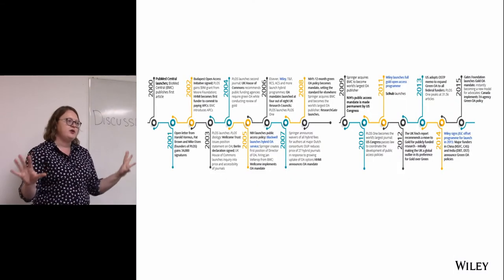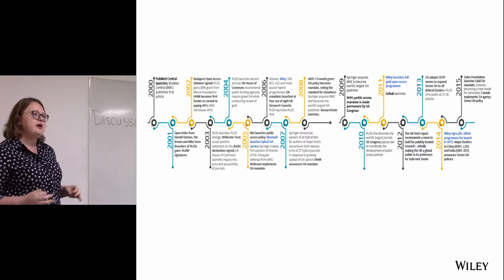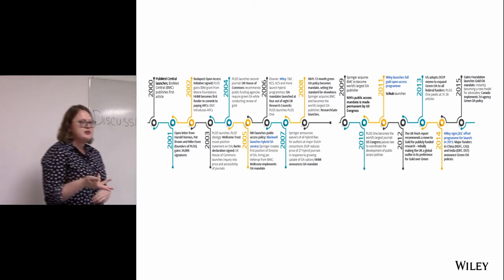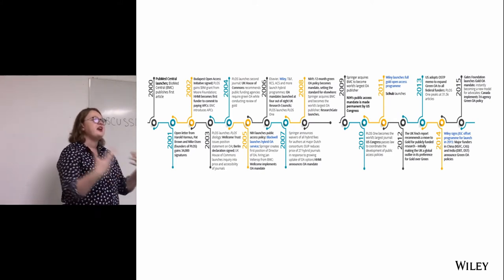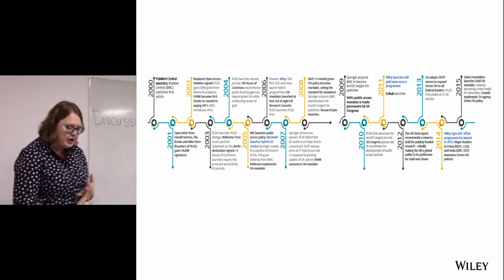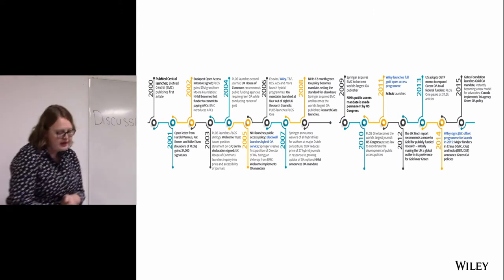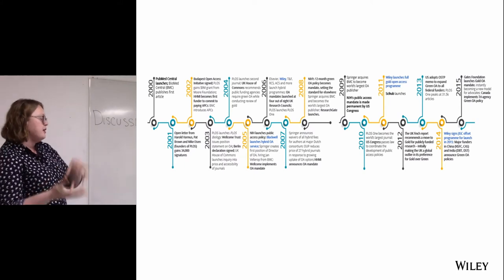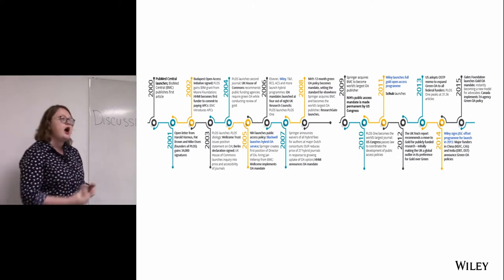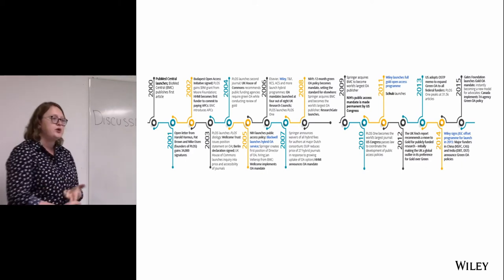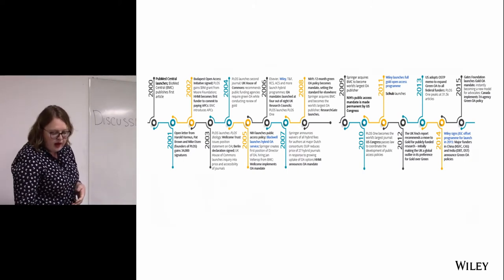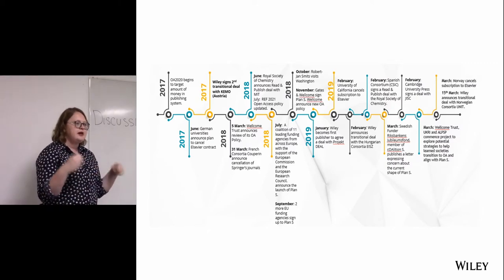It's useful to understand how we got to where we are now. The conversation around open access started in the 90s and really kicked off around 2000 when the internet was becoming a thing. In the first few years we had things like the Budapest Open Access Initiative. It was really in the beginning of this decade that it started to take pace — publishers started offering green and gold options, and the Finch Report in the UK recommended gold open access for UK research.